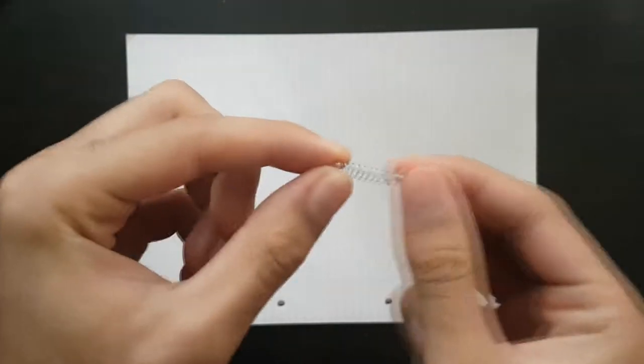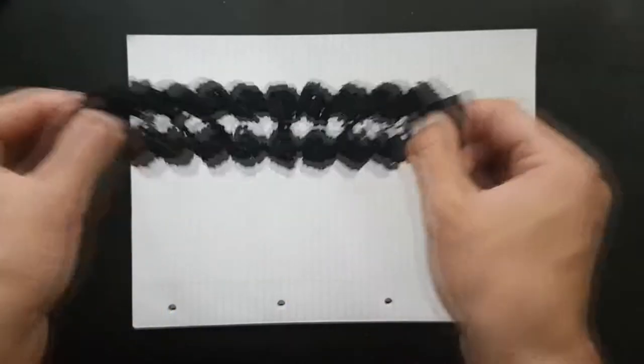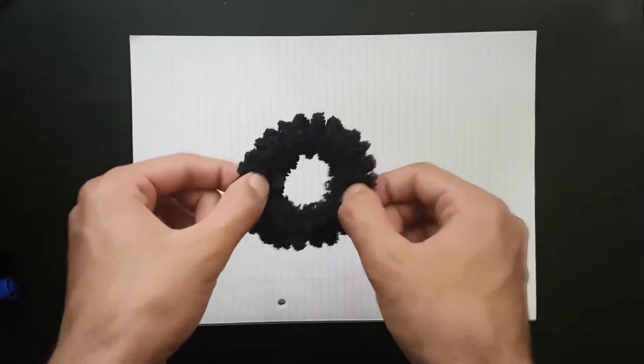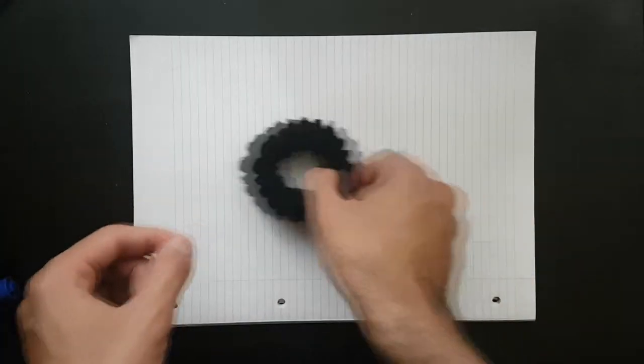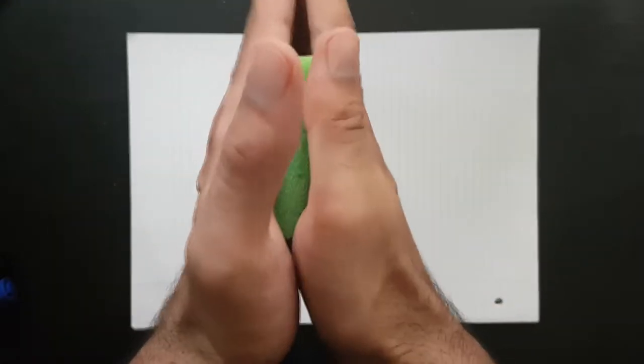To understand springs, first we need to understand elasticity. This is when a material changes shape or deforms when a force is applied, and then returns to its original shape when the deforming force is removed. Many objects display elastic characteristics such as scrunchies, sponges, and even metal beams and bridges where the deformations are much smaller.